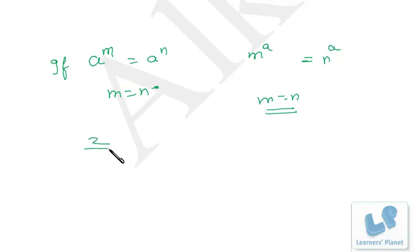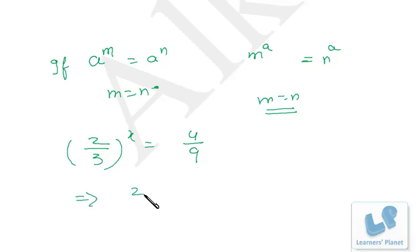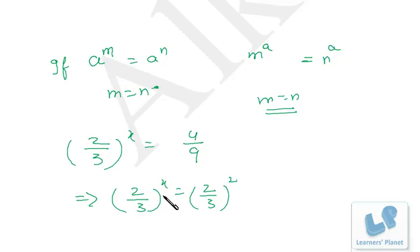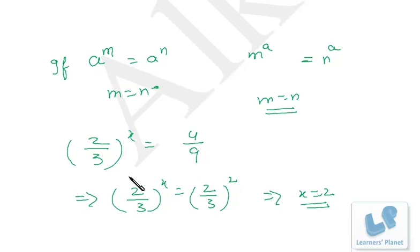I'll take one example. Suppose 2/3 raised to x is equal to 4/9. So 2/3 raised to x is equal to 2/3 squared. So since the base is the same, the power will be same. That means x is equal to 2. So let's take some problems based on this concept.